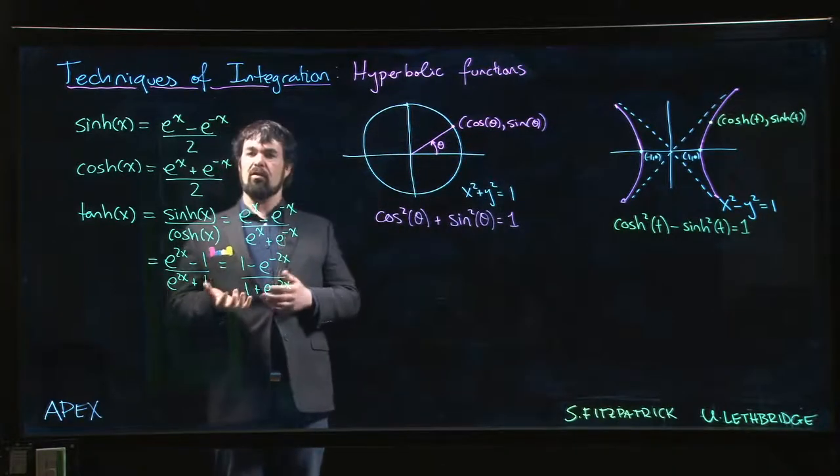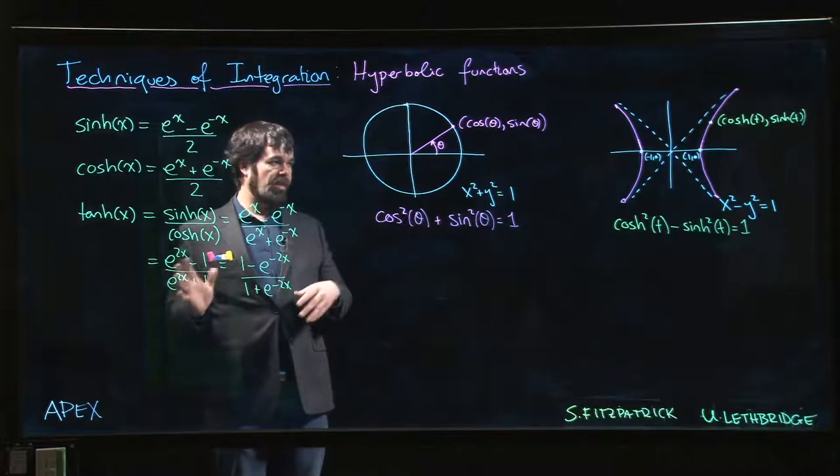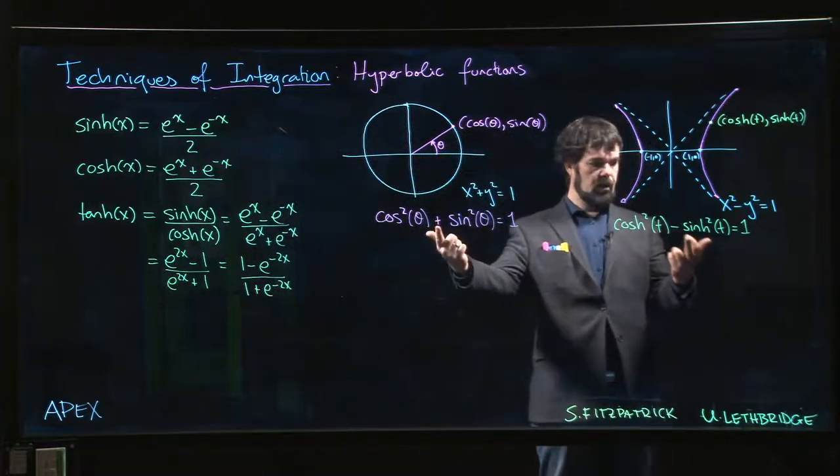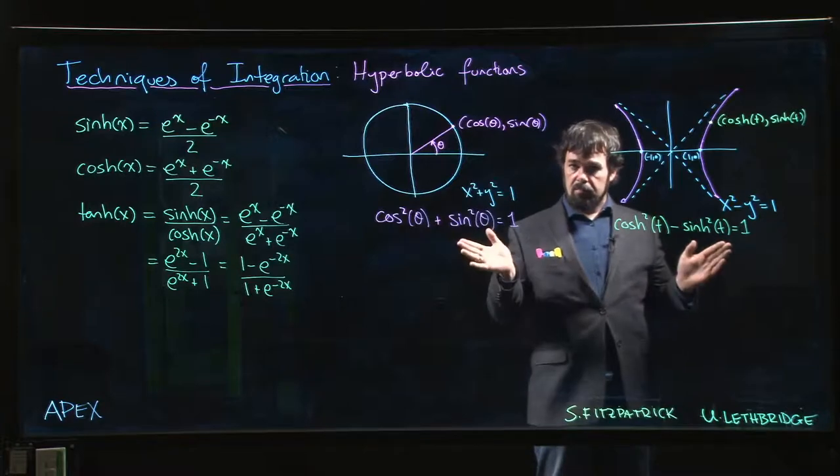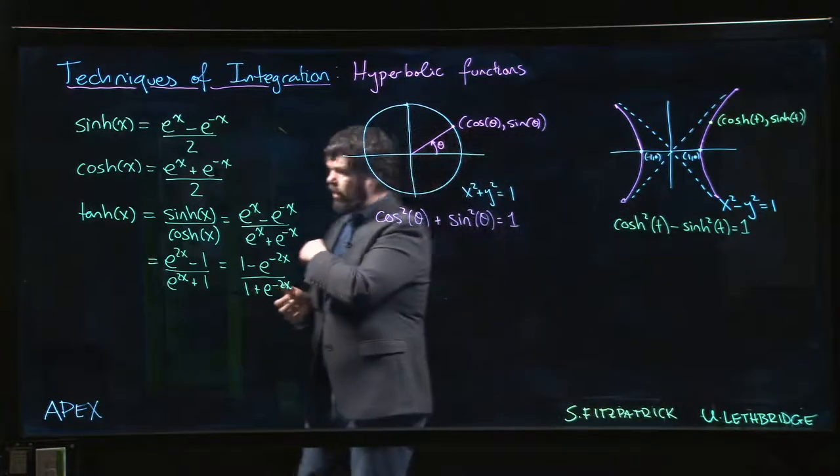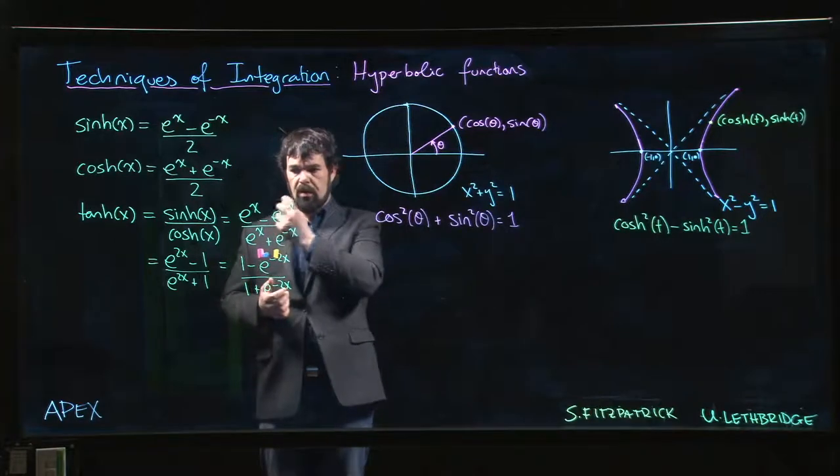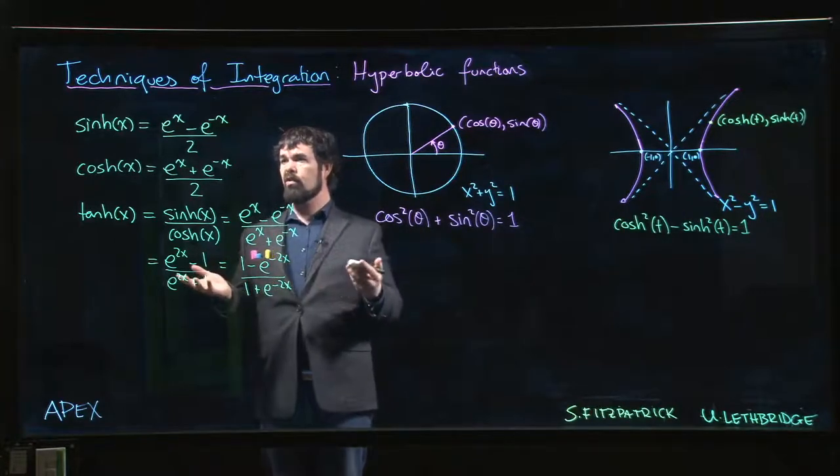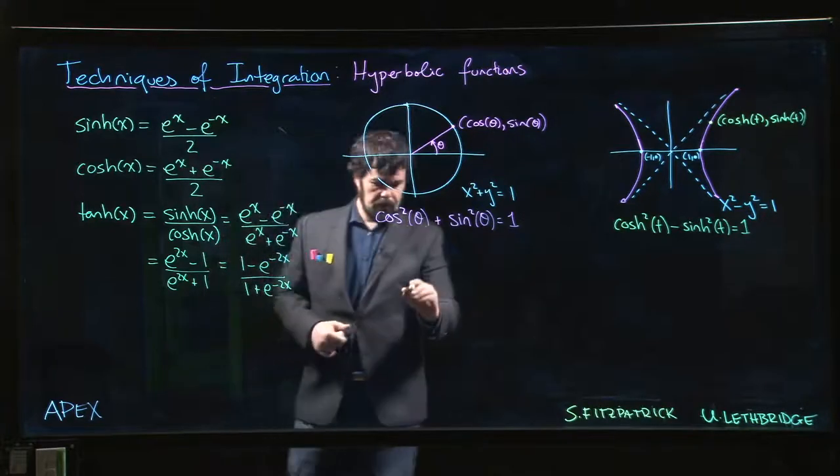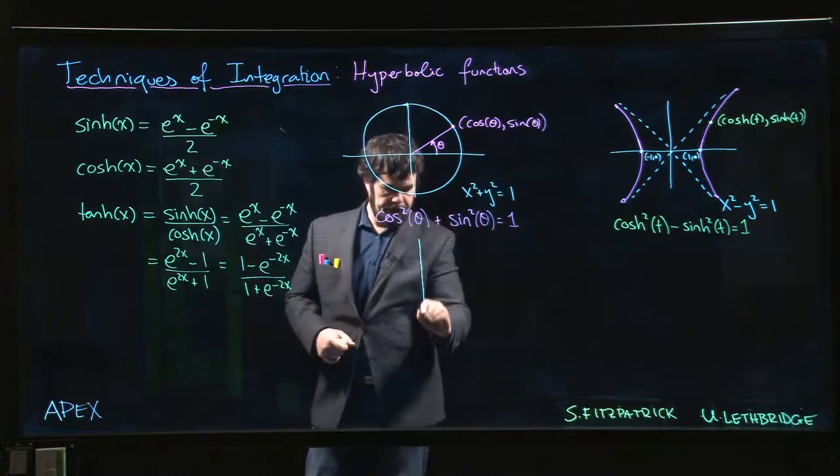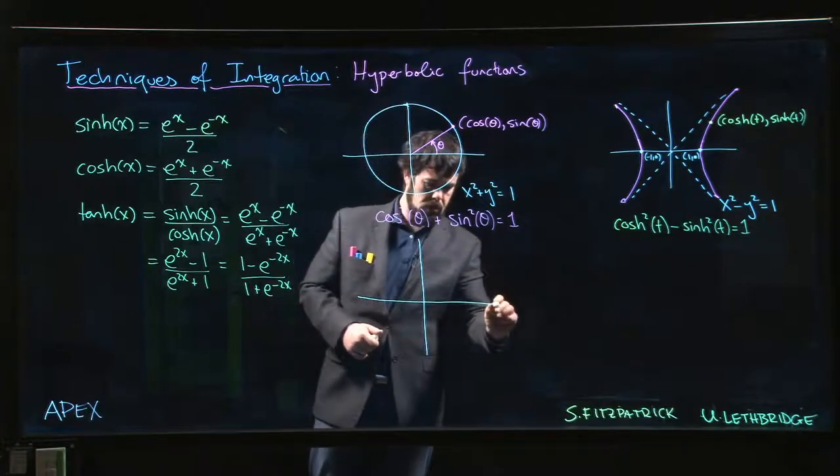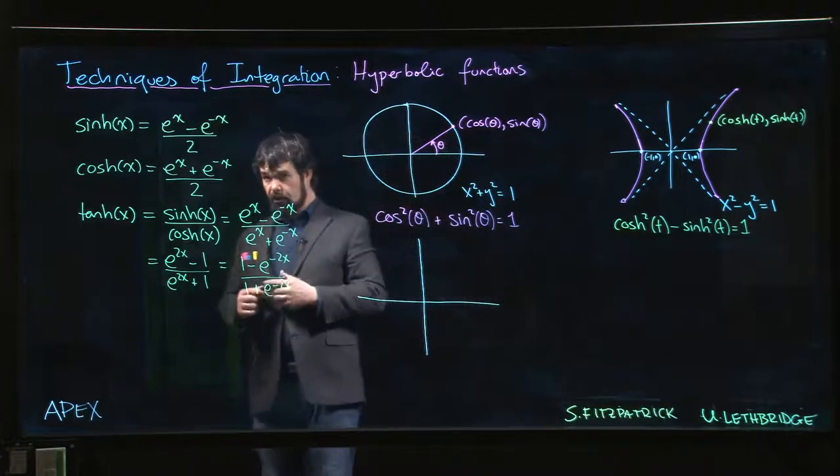They have a lot of similar properties in the sense of the way derivatives and integrals work, identities that they satisfy. For example, we see this one here - there's a difference of a sign but pretty similar. Just to familiarize ourselves and get an idea of how things look, one of the things that's nice to do is say, what do these look like? What are the graphs look like? And we can start with the hyperbolic sine function.